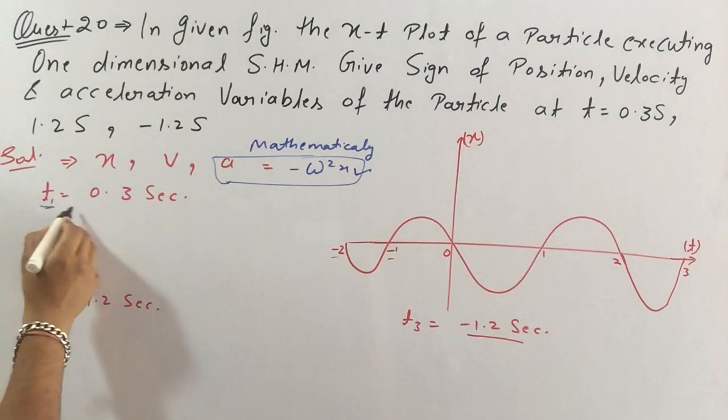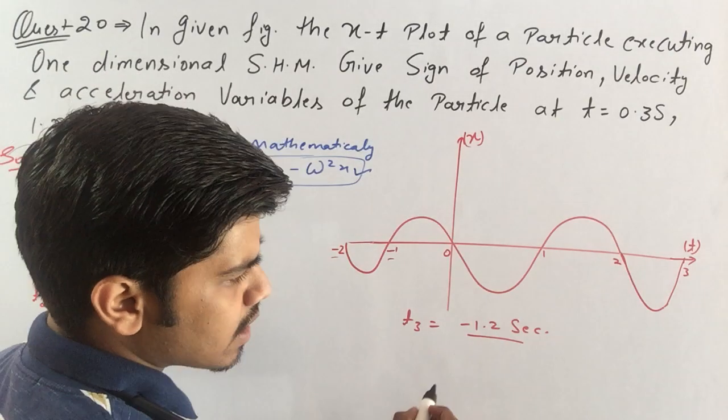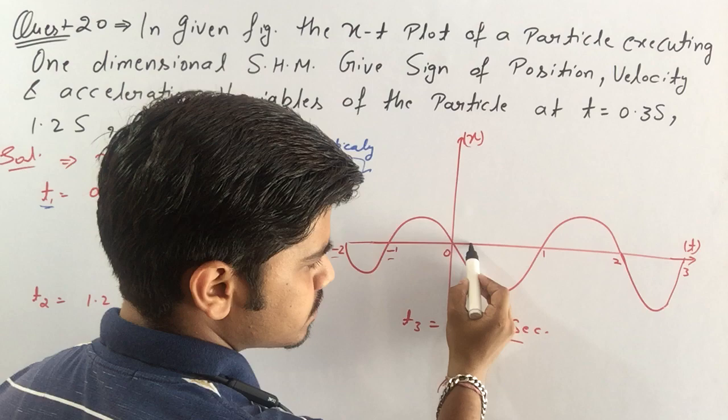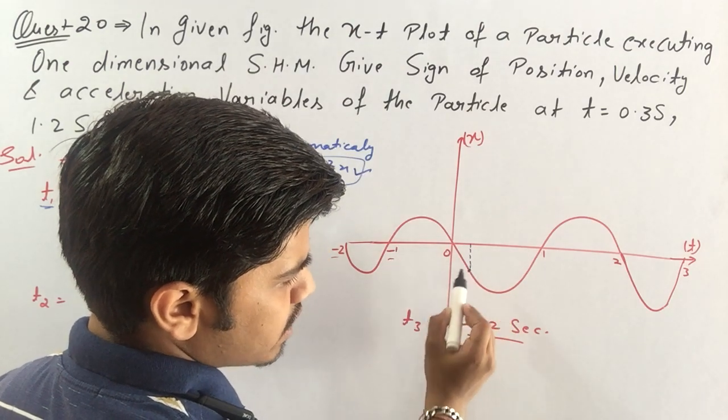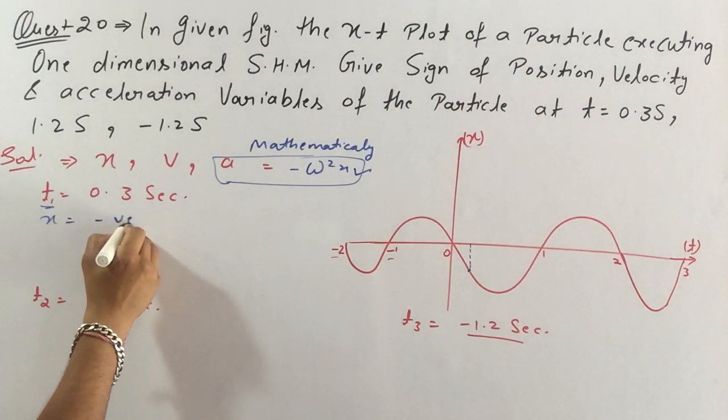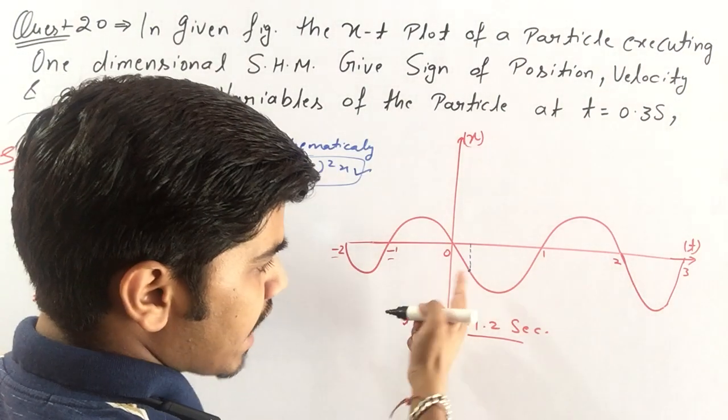Now see, at T1 0.3 second, our graph at 0.3 second, suppose it was here. And as we know x is having a negative value. So at T1, x is negative.